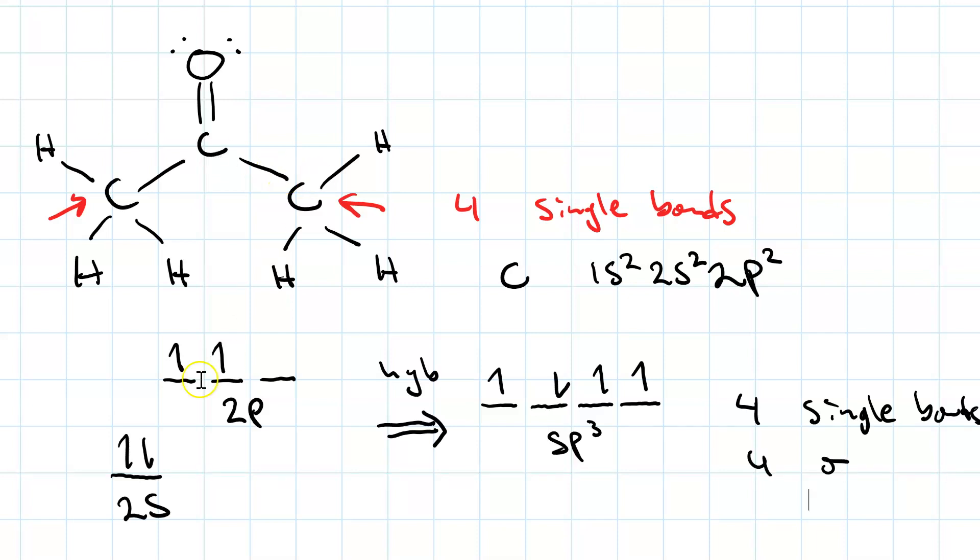Now, since we hybridized four orbitals, and we got four hybrid orbitals, that just illustrates that the number of orbitals you start with equals the number of orbitals you end up with.